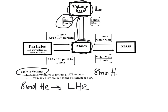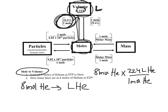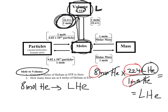Looking at the conversion factor: 22.4 liters on top, one mole on the bottom, both labeled helium. Moles of helium cancel out, leaving liters of helium — which is the volume we were looking for. The math is 8 times 22.4 divided by 1, which equals 179.2 liters.